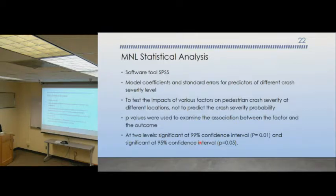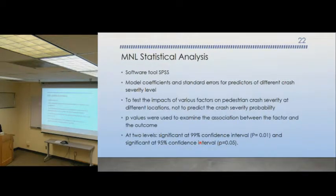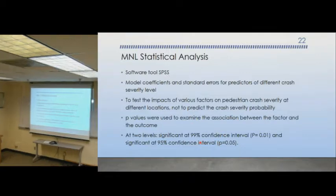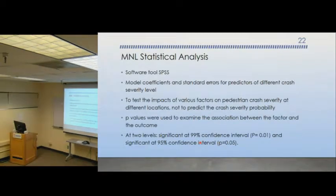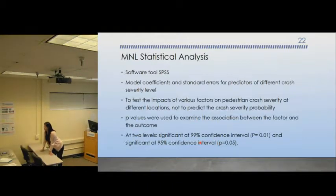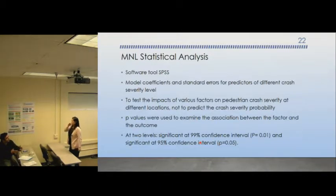An audience member asked about the initial table showing a rise in pedestrian fatalities after 2010. What are the major driving reasons for the increase beyond just control type? Dr. Chi responded: most likely it's human error. For instance, a pedestrian crossing sign requires drivers to yield, but many don't. The question of how to improve yielding rates — perhaps through flashing lights rather than just signs — is relevant. Cell phone use by both drivers and pedestrians could also be playing a role.